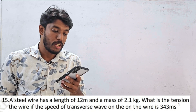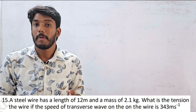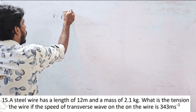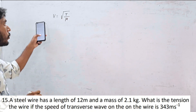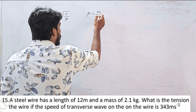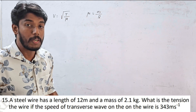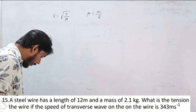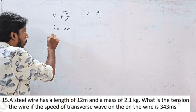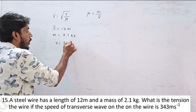A transverse wave on a wire travels at 343 m/s. The formula for wave speed is v = √(T/μ), where T is tension and μ is linear density. Linear density μ = mass/length. The wire has length 12 meters and mass 2.1 kg. Speed is 343 m/s. We need to find the tension.